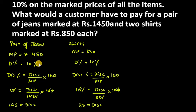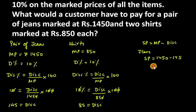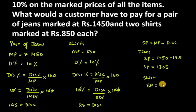Now we need to find the selling price. The formula is: Selling Price = Marked Price − Discount. For jeans: SP = 1450 − 145 = rupees 1305. For one shirt: SP = 850 − 85 = rupees 765.